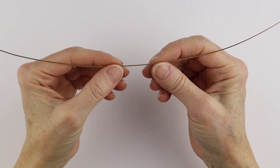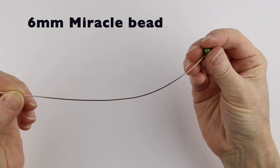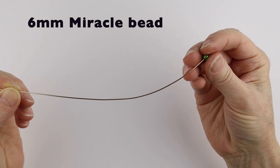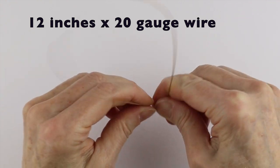I had a special request from Turtle to make a turtle ring, so I'm going to take a six millimeter miracle bead and put it on a 12 inch piece of 20 gauge artistic wire.